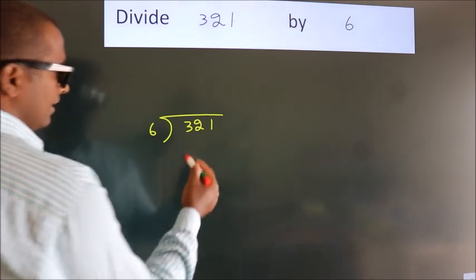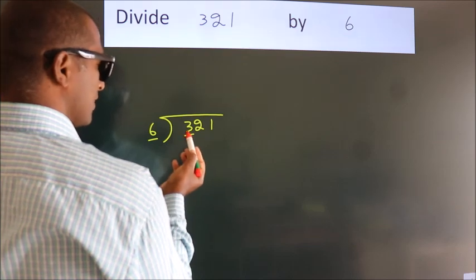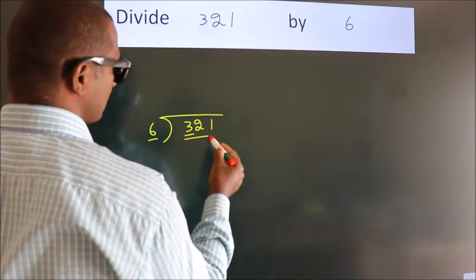Next. Here we have 3. Here 6. 3 is smaller than 6. So we should take 2 numbers: 32.